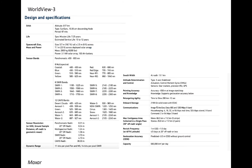OrbView satellites are another series that has produced publicly available data. However, like many other private satellite systems with high resolution data, the data is proprietary. The US government has purchased much of this data, and we will see an example shortly.